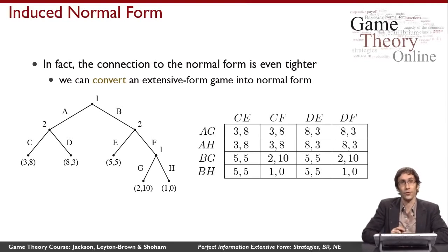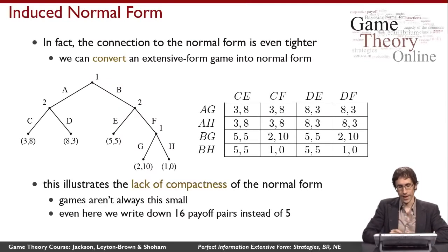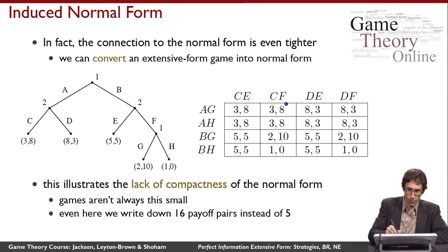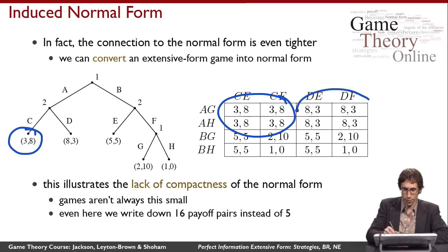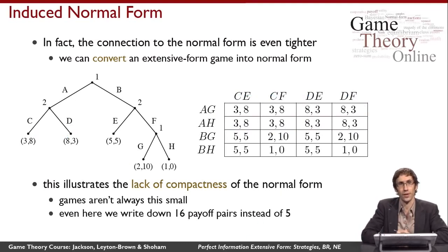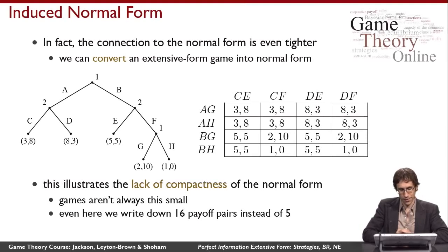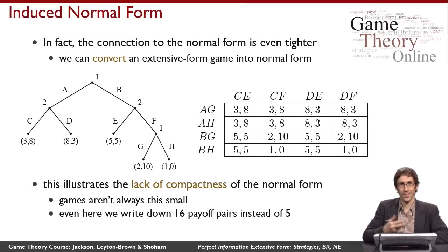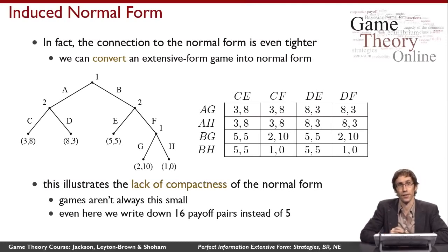This is called the induced normal form of the extensive form game. One thing to notice is that it has more entries than there are leaf nodes — there are repetitions. For example, 3, 8 gets repeated four times even though it corresponds to one payoff, because four pure strategy profiles lead to that same leaf node. This blowup is exponential: as the game tree grows, it can become very difficult in practice to write down the induced normal form.